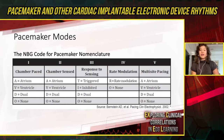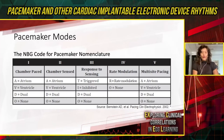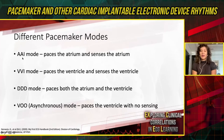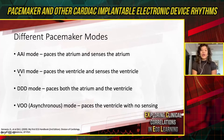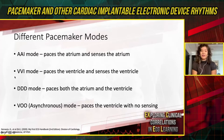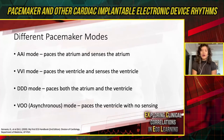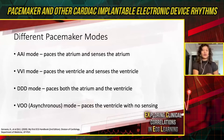Let's take some specific examples. AAI mode: chamber paced — atrium; chamber sensed — atrium; response to sensing — inhibited. It will pace in the atrium, and if it senses intrinsic atrial activity, it inhibits itself. Similarly, VVI mode paces and senses in the ventricle, with inhibited response to sensing. In DDD mode, pacing occurs in both atrium and ventricle, sensing in both, with both triggered and inhibited responses. VOO is the magnet mode — sensing is turned off and you have straight pacing in that chamber.